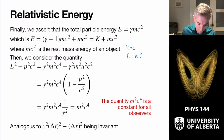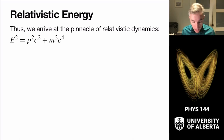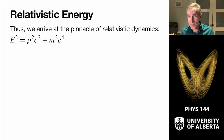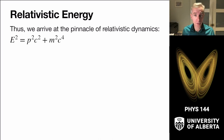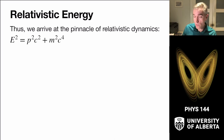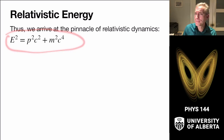Rearranging, we arrive at one of the most important equations in relativistic physics: E² = p²c² + m²c⁴. If the particle's speed is zero, this reduces to E = mc². If you're going to have a formula sheet, write this down on it.